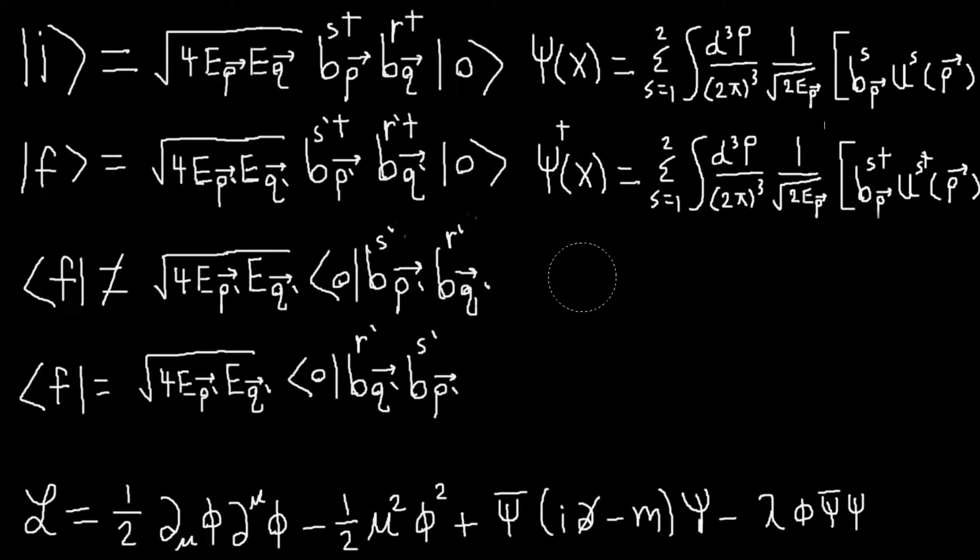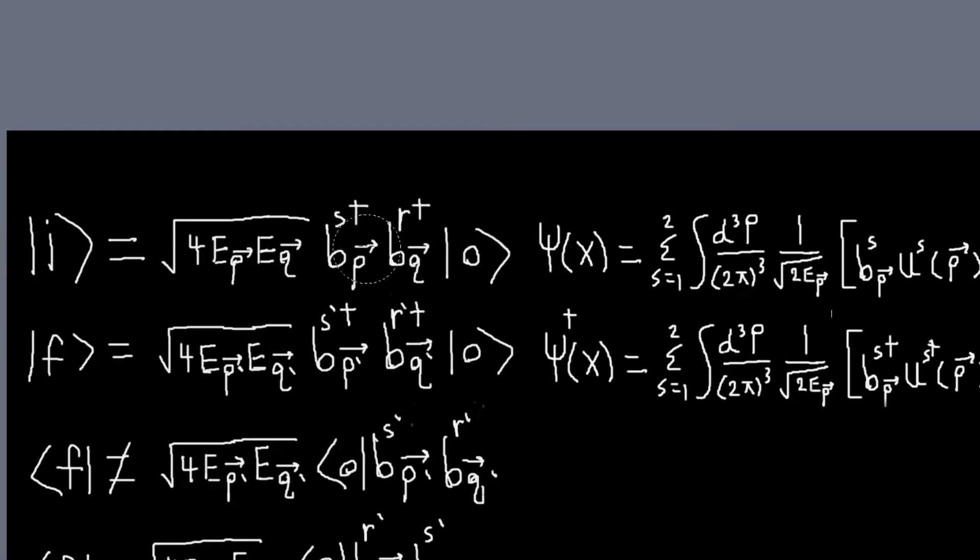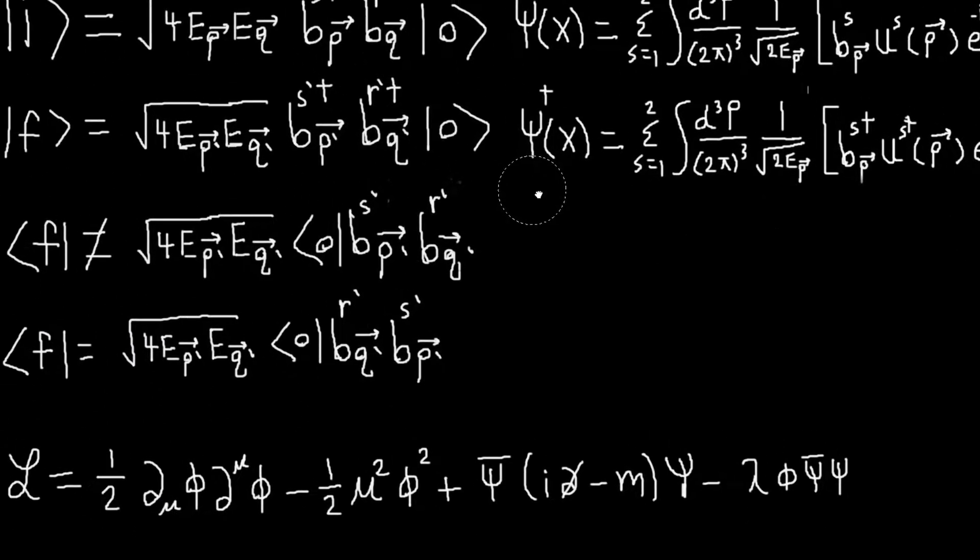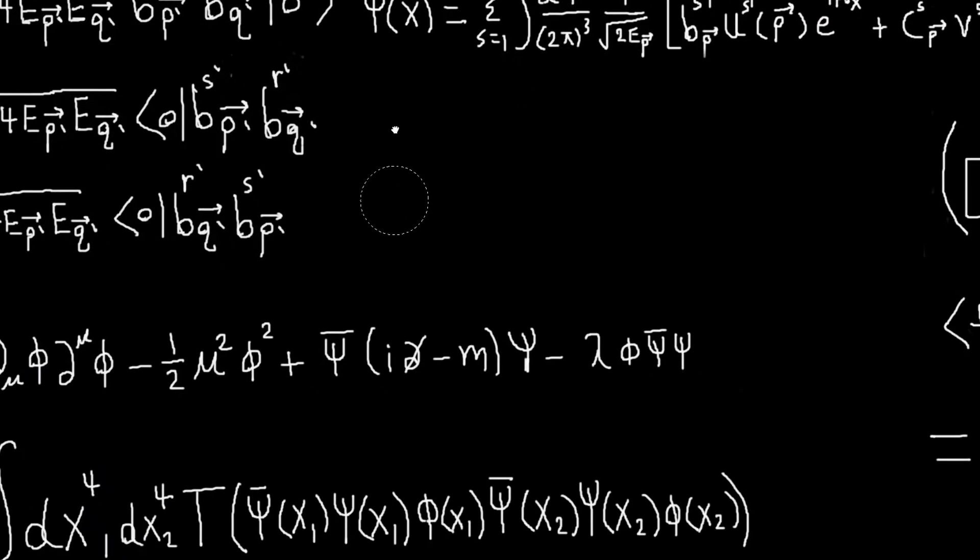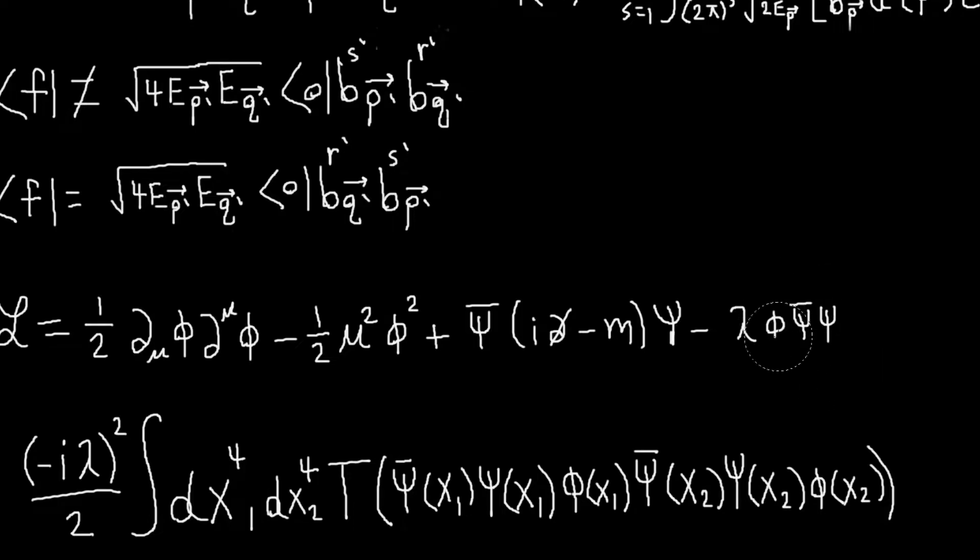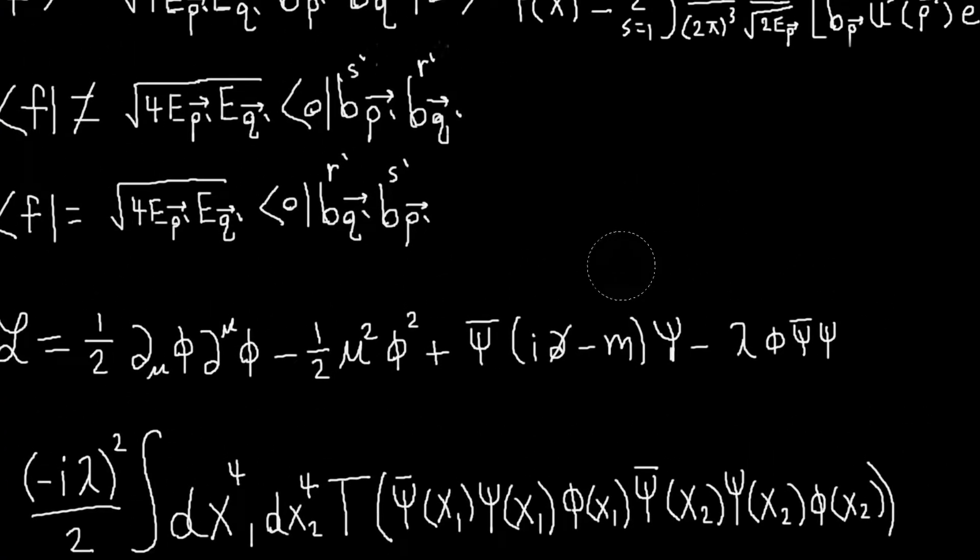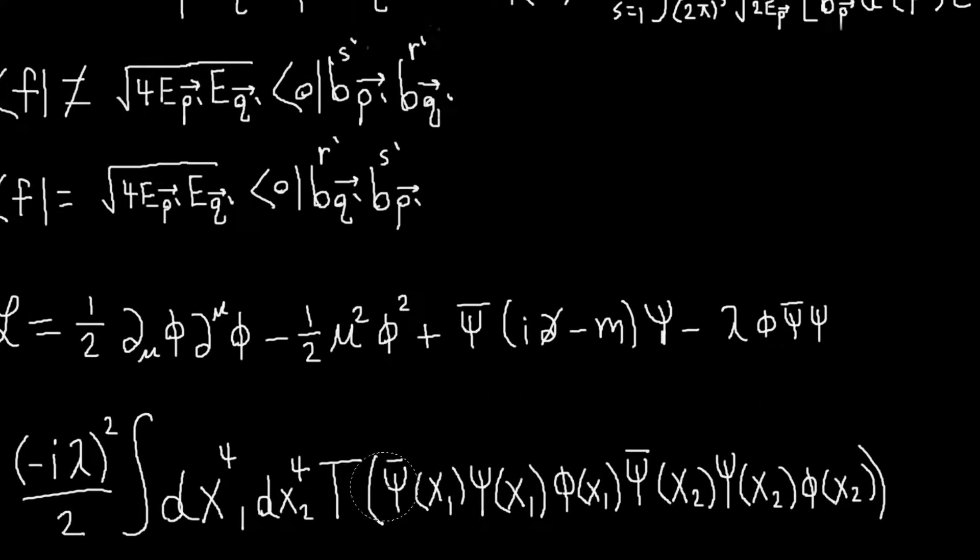And so if we look at this process, to get from this state to this state, I have to destroy these two B particles, and then create two more B particles. And so the first order term in the expansion of this operator, you couldn't get from this state to this state with that term because you only have one pair of psi bar and psi.